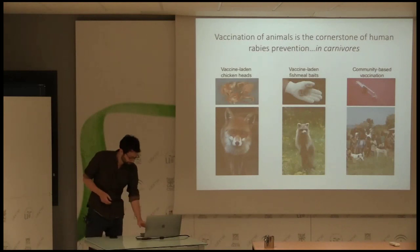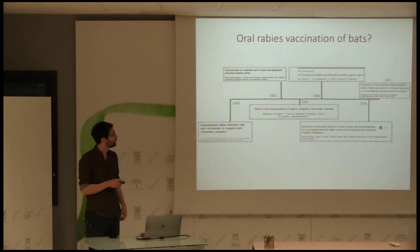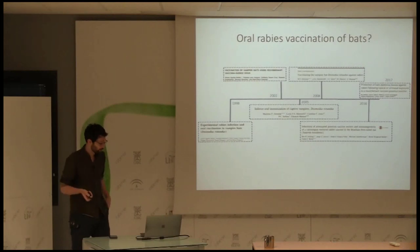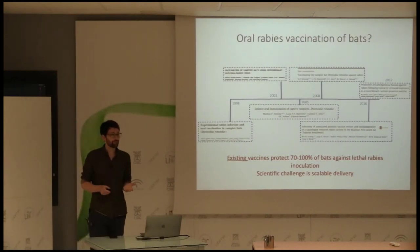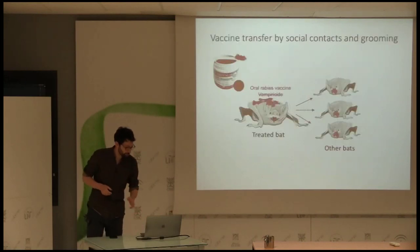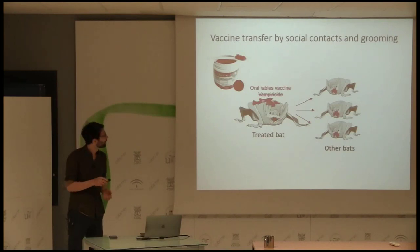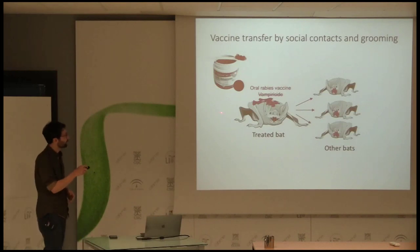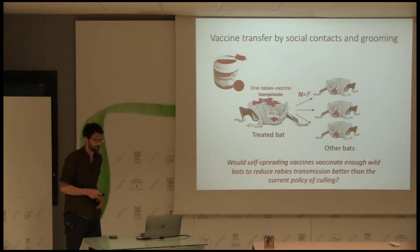We know vaccination works in carnivores — why isn't it being done in bats? One potential limitation might be lack of vaccines, but that's certainly not true. We've had vaccines that work and protect bats at least in captivity since 1998, and they're getting better — at the moment we already have vaccines that can protect 70 to 100 percent of individuals that have consumed them. The real challenge is can we move from a captive situation to a wild situation? Can we actually vaccinate enough bats in the wild to make a difference?